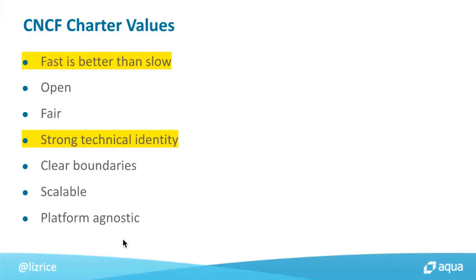We have a charter. I've tried to abbreviate the sections of the charter into key headings, and today I was just going to dwell on two salient points that really relate to what the TOC is trying to do. One is: fast is better than slow. Another is that the CNCF should represent a strong technical identity — we're very much about this software that we call cloud native. What does that mean and what does that require from different projects in order to meet that identity?